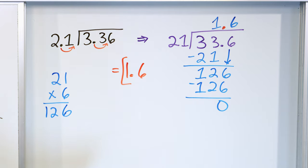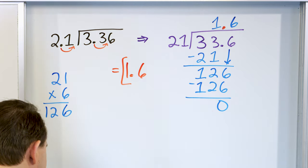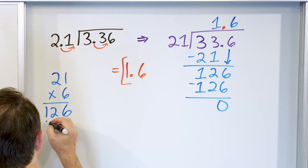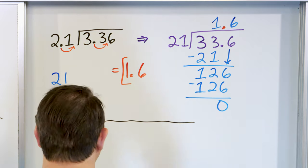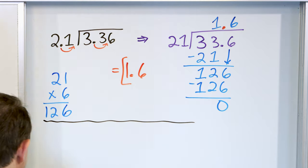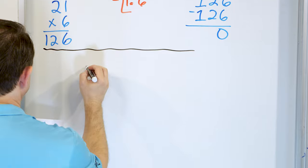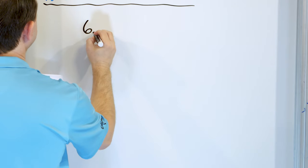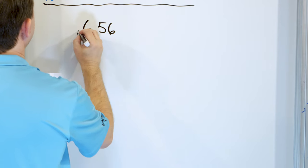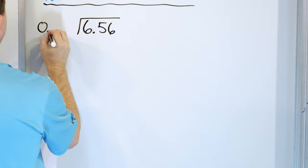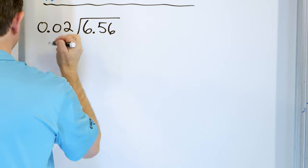Alright, we're almost done. I know these are kind of long, but we just need to get a lot of good practice to make sure we're on the same page. Let's take a look at the problem 6.56, and we'll divide it by 0.02.